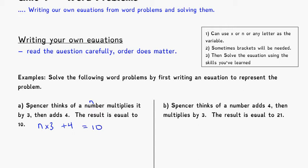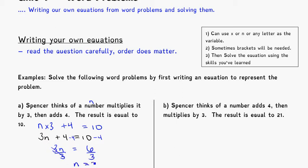We can write that more neatly as 3N plus 4 is equal to 10, where 3N means 3 times N. Now if I'm going to solve that, I subtract 4 from both sides, so 3N is equal to 6, then divide by 3 on both sides, giving us N is equal to 2. So Spencer is thinking of the number 2.